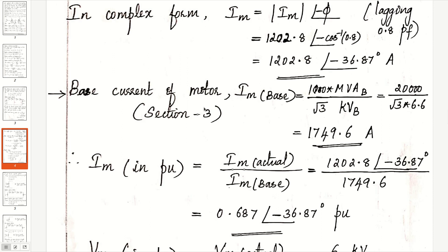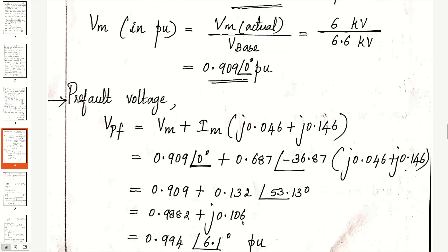To find Im in per unit, divide the actual value by the base value. The motor is in section 3, so Im base equals 1000 times MVAB divided by (root 3 times KVB), where MVAB is 20 and KVB is 6.6. Im base is 1749.6 amperes. So Im in per unit is 0.687 at angle minus 36.87 degrees per unit. Similarly, Vm in per unit equals Vm actual divided by Vm base. The base voltage in section 3 is 6.6 kV, giving Vm as 0.909 at angle 0 degrees per unit.